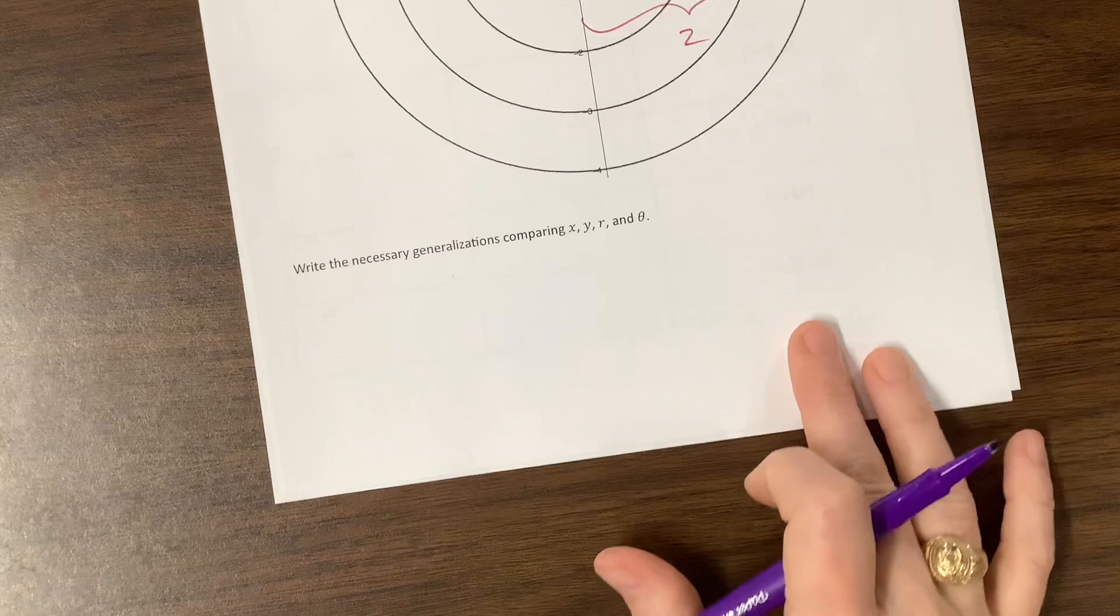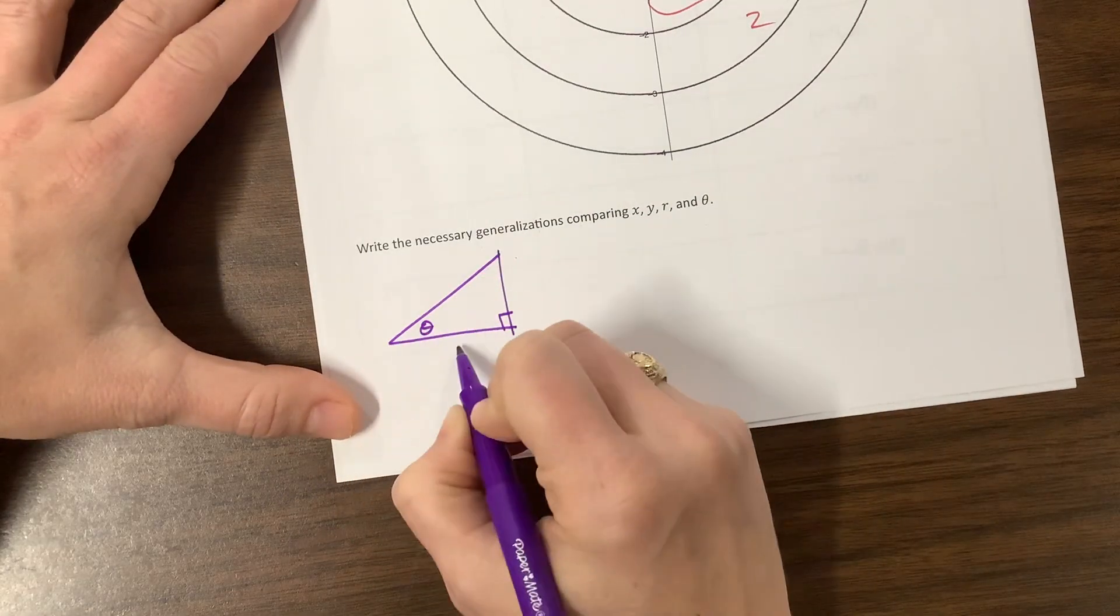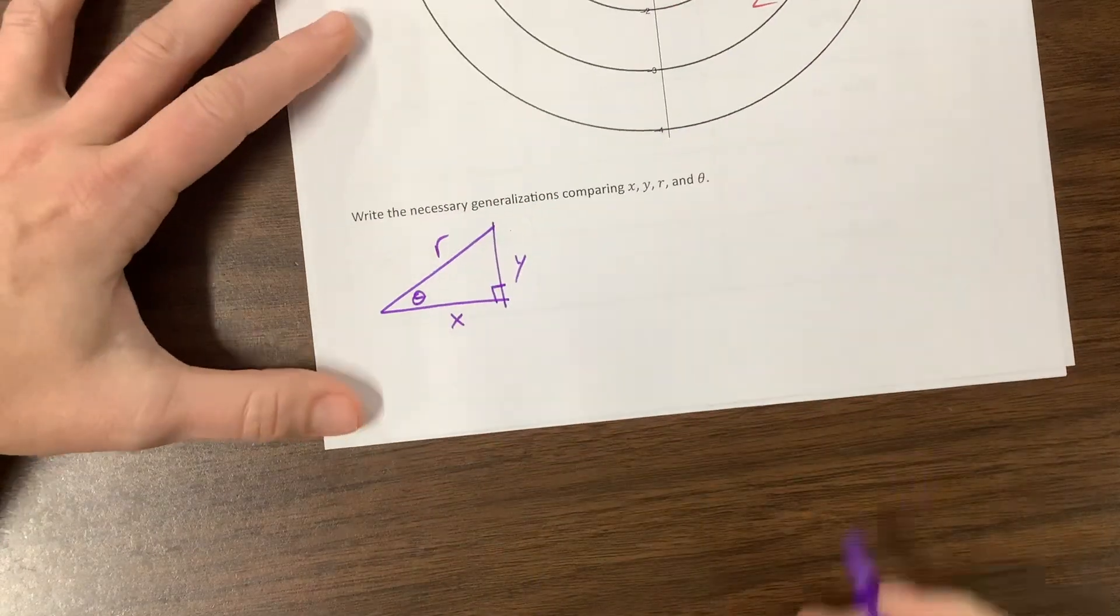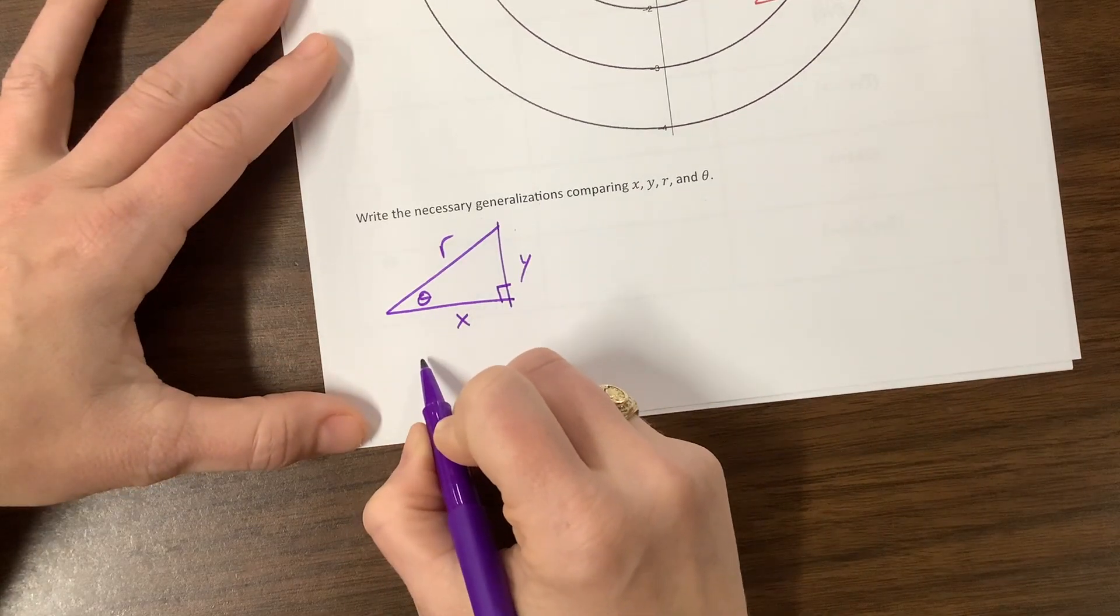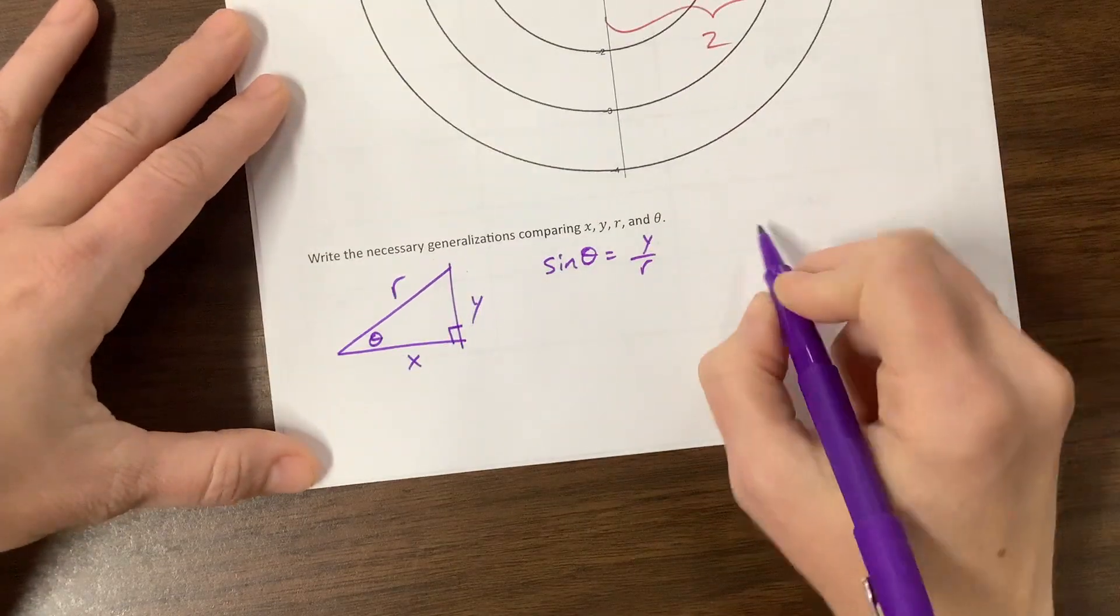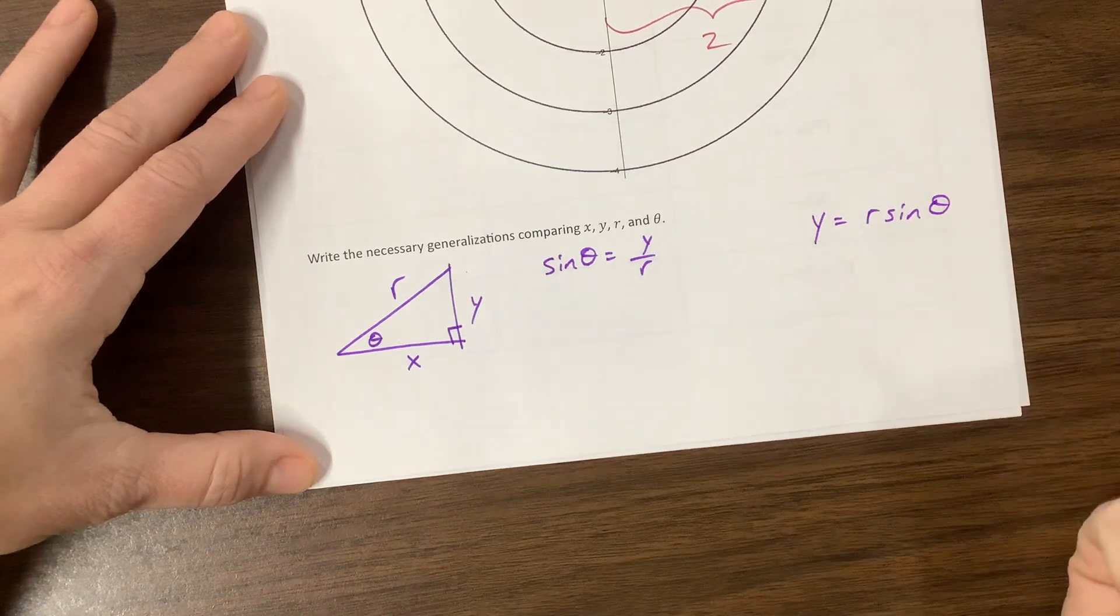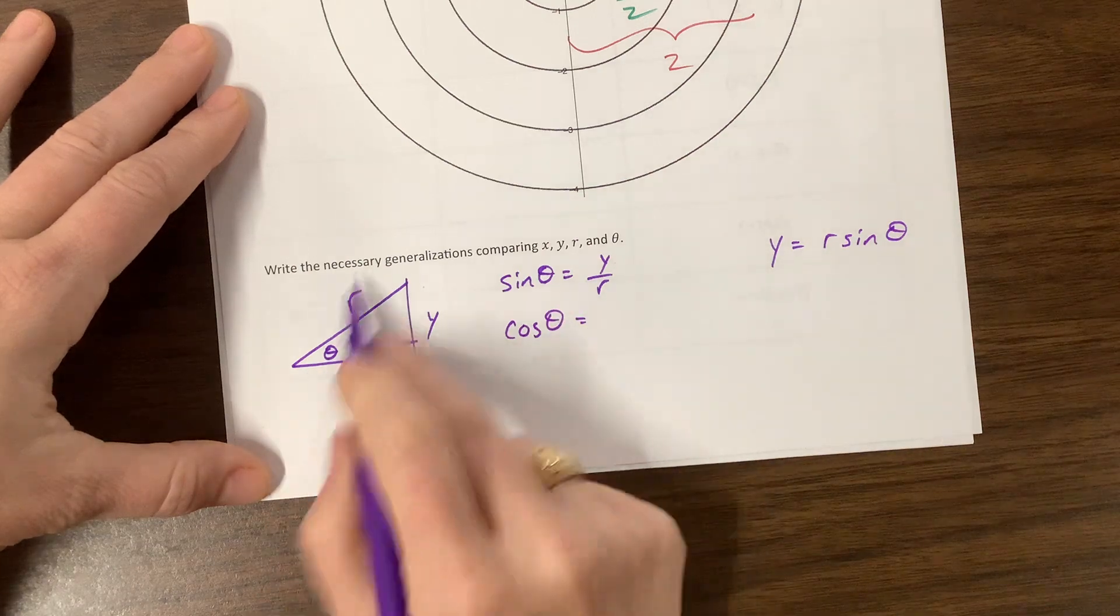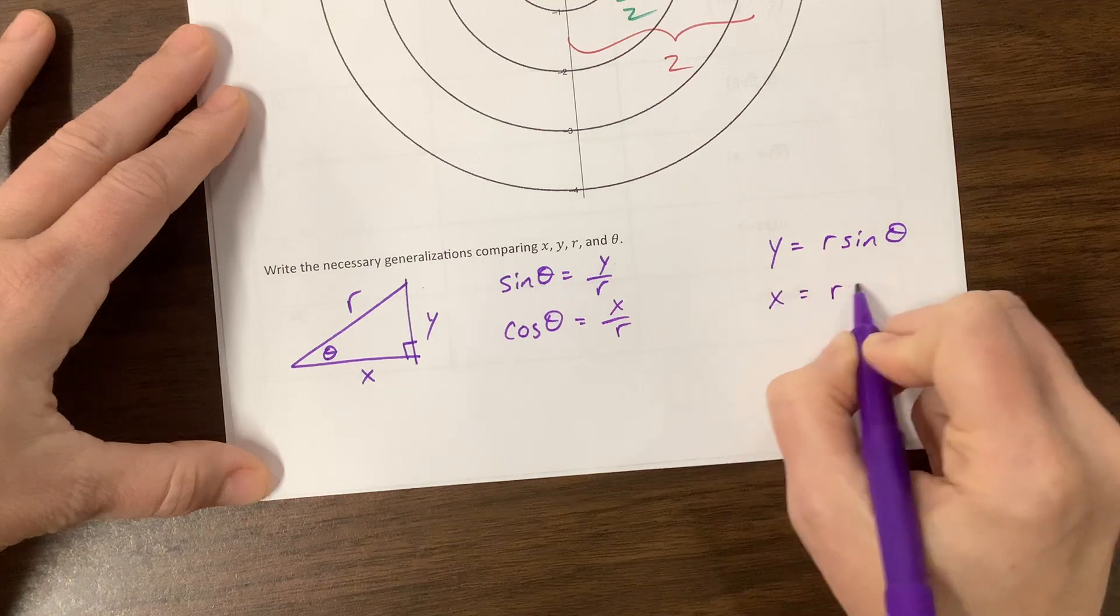Okay, so the necessary things. What's happening here when we have, well, like if I look at, I have this triangle, here's my theta, this is the x value, this is the y value. Here's the radius. Well, what do I know from geometry? I know that sine of theta is equal to y over r. So what can you say? We can write the rule that y is equal to r sine theta. Okay, we know cosine of theta is equal to adjacent over hypotenuse, so x over r. So x is equal to r cosine theta.